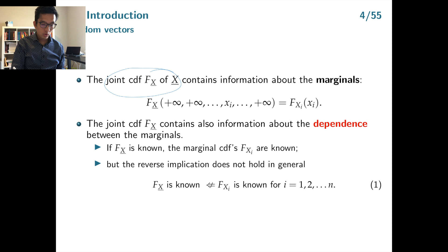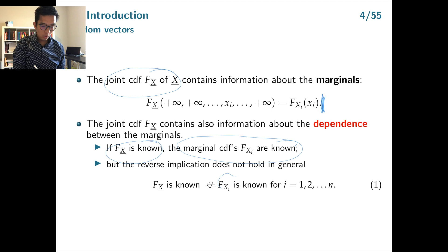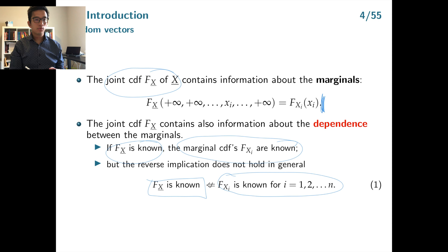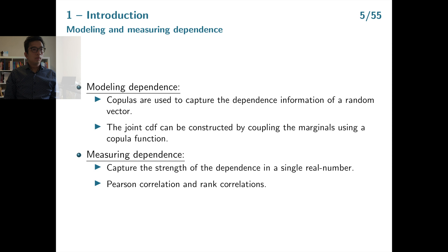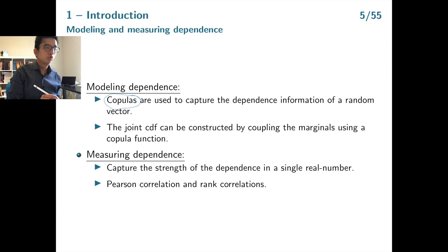If you know the joint CDF of your random vector, you can back out the marginal CDFs. So the joint CDF contains information about the marginal CDFs. However, you cannot go in the opposite direction: if you know all your marginal CDFs, you still do not have enough information to determine your joint CDF. The marginal CDFs tell you how the risks x1, x2, ..., xn behave individually. The missing piece to construct your joint CDF is the information about dependence — how these marginals are moving together.